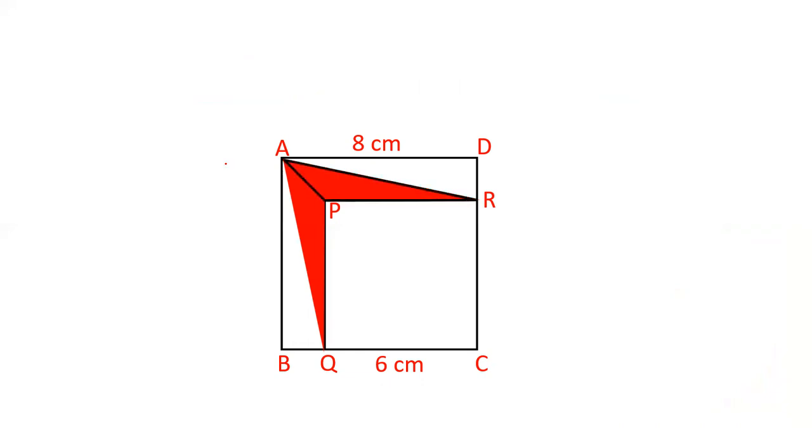Take this triangle APR. The base of this triangle is 6 centimeters (PR) and the height is 2 centimeters. Because AB is 8 centimeters, this length is 2 centimeters.